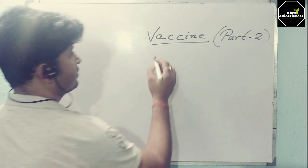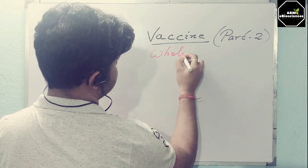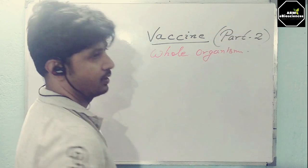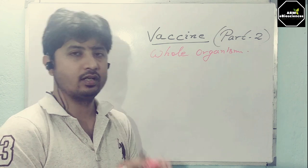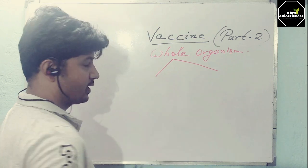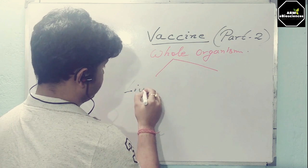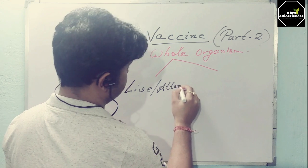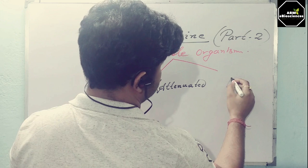If you consider the whole organism vaccine, that means the total pathogen is present in the vaccine. This can be divided into two parts: the whole organism vaccine can be of two types — one is live attenuated, and another one is killed vaccines.